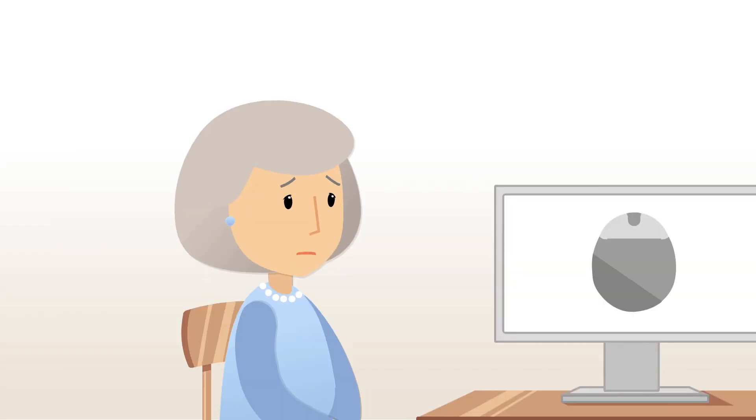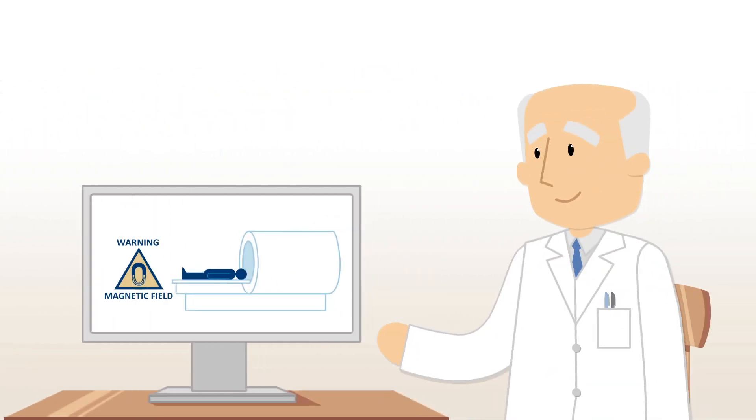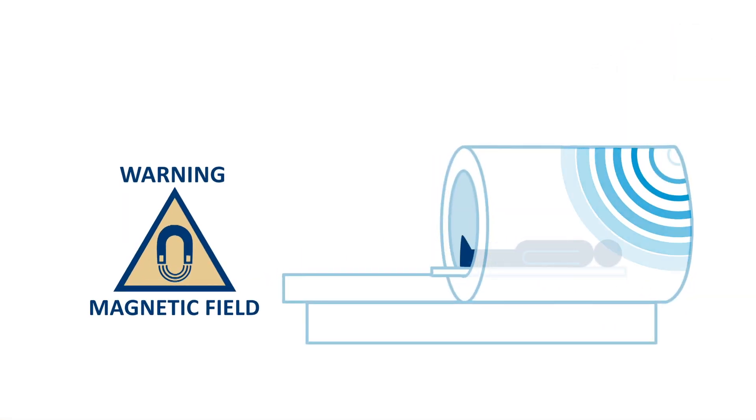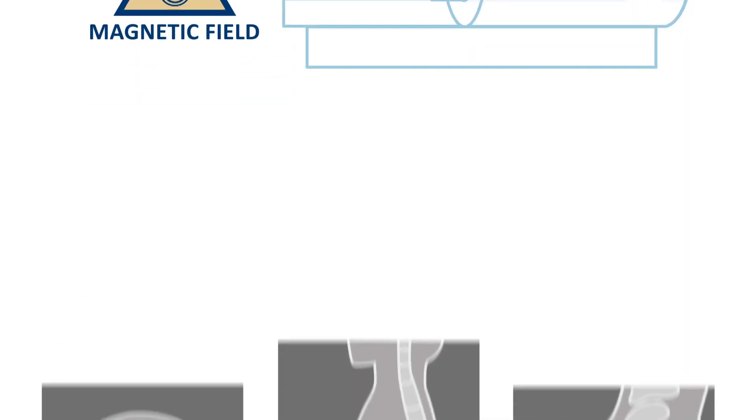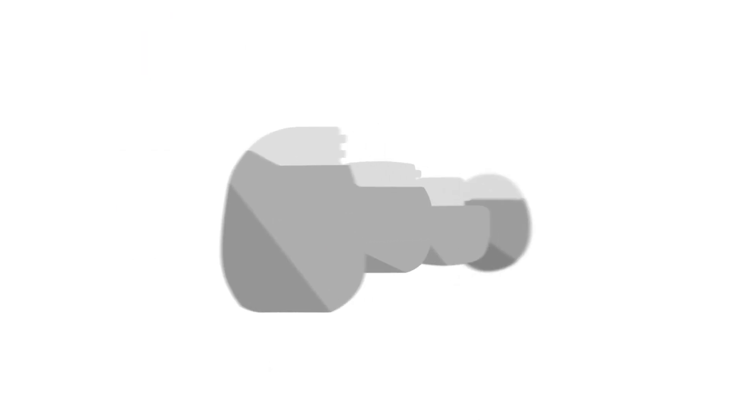However, Anna has heard that a DBS implant means she won't be able to have an MRI scan in the future. Her physician tells her that during an MRI scan, the patient lies in a strong magnetic field, while pulses of radio waves produce pictures of structures inside the body, and because of this, most implantable devices are incompatible with this technology.